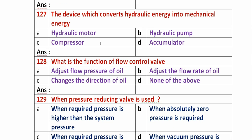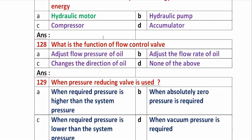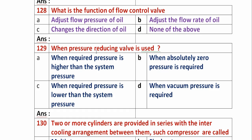Question 127: The device which converts hydraulic energy into mechanical energy is? Option A: hydraulic motor. Option B: hydraulic pump. Option C: compressor. Option D: accumulator. A device which converts hydraulic energy into mechanical energy is a hydraulic motor. So option A, hydraulic motor, is the right answer.